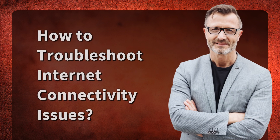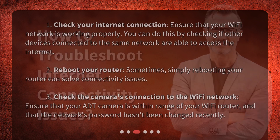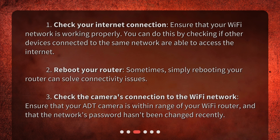How to troubleshoot internet connectivity issues: 1. Check your internet connection — ensure that your Wi-Fi network is working properly by checking if other devices connected to the same network are able to access the internet. 2. Reboot your router, as simply rebooting it can sometimes solve connectivity issues. 3. Check the camera's connection to the Wi-Fi network, ensuring your ADT camera is within range and that the network's password hasn't been changed recently.